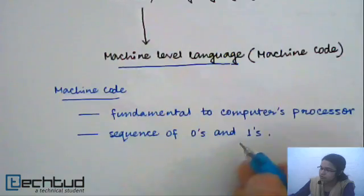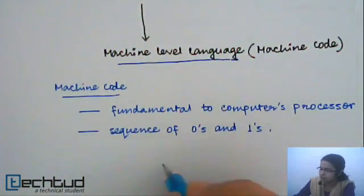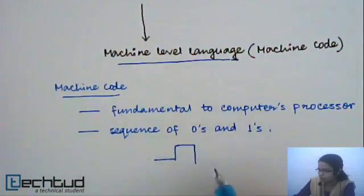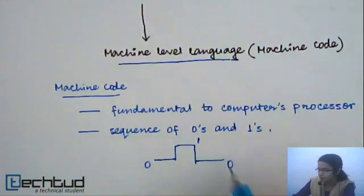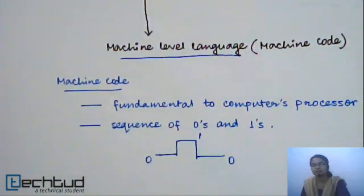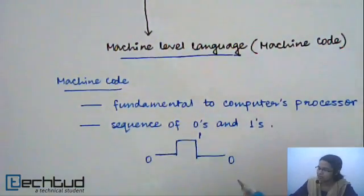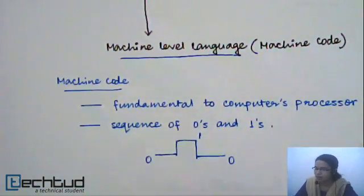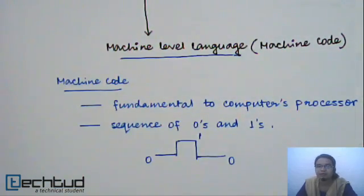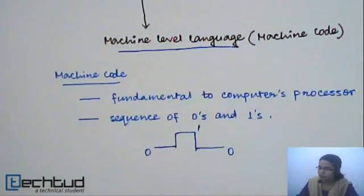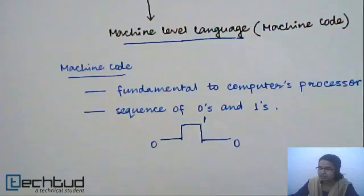These 0s and 1s represent high voltage and low voltage. A computer is basically an electrical device, so it understands high voltage and low voltage. Through this, the sequence of 0s and 1s makes a machine code. So it is machine readable but not easily human readable.